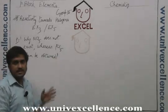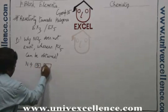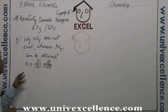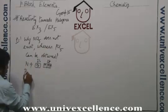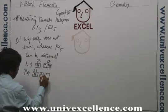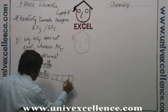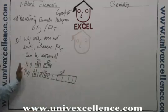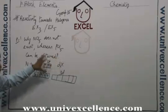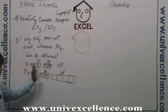Looking at the electronic configurations: nitrogen has 2s² 2p³, whereas phosphorus and higher members of the group have 3s² 3p³. In phosphorus and higher members, vacant d orbitals are available. But in nitrogen there is no d orbital, so nitrogen cannot expand its valency beyond 2p. That is why nitrogen cannot form NX5 — meaning NCl5 cannot be obtained — whereas phosphorus can form PCl5.